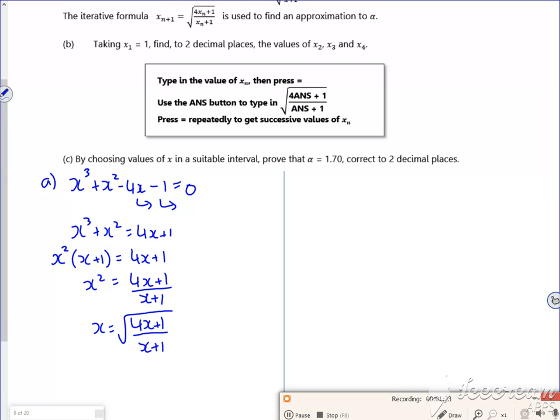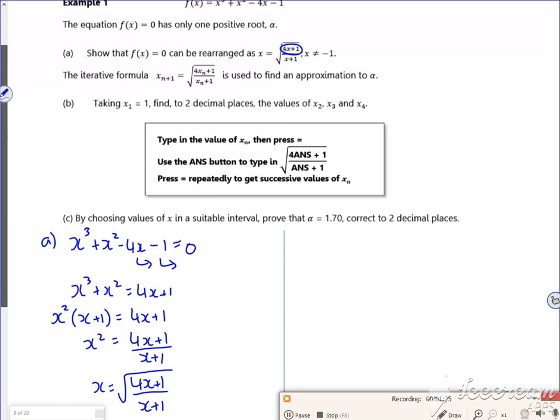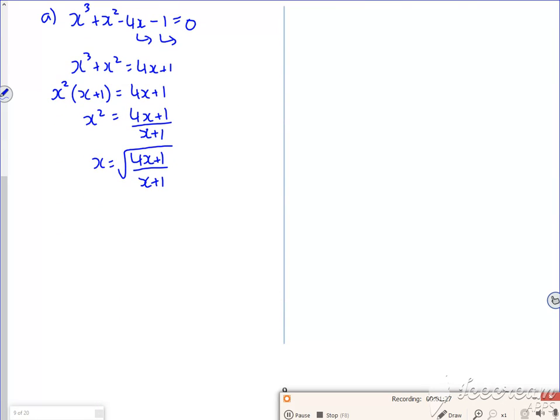There, now there we go. So the idea is with the subscript notation, x to the n plus 1 is my next x, that's my next x, whereas x to the n is the one I've got at the moment.